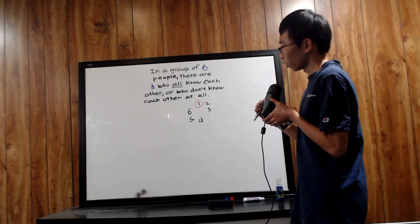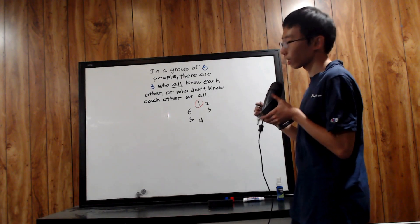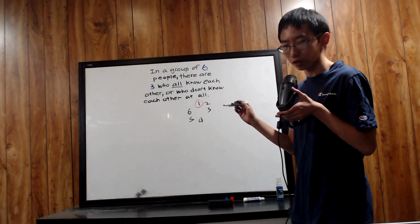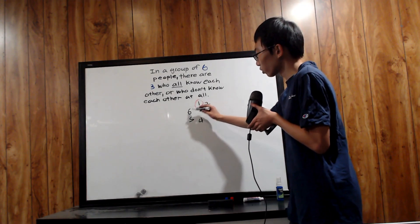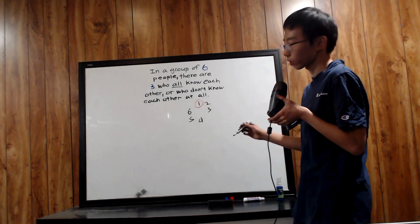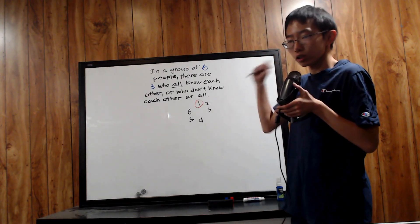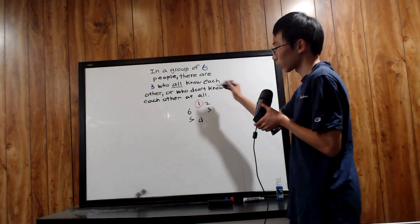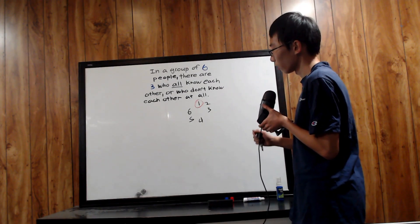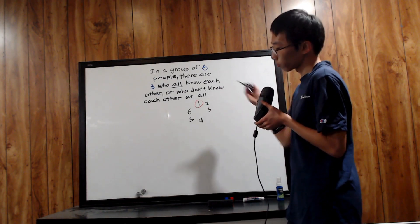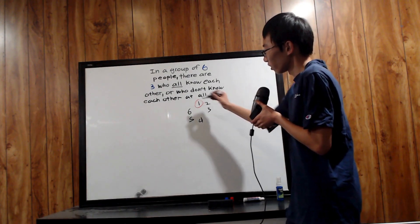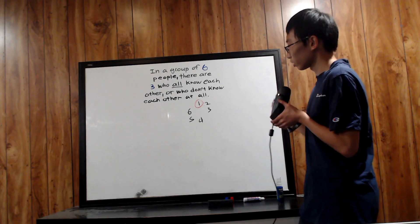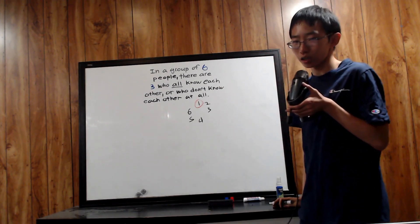With that fact, if you really think about it, this means there are at least three people which person one knows or does not know. For instance, person one might know six but not know the others — that satisfies the condition, as there are four people person one does not know. Even if person one knew five and four as well, there are still three people that person one knows. So regardless, there must be at least three people which person one knows or does not know.